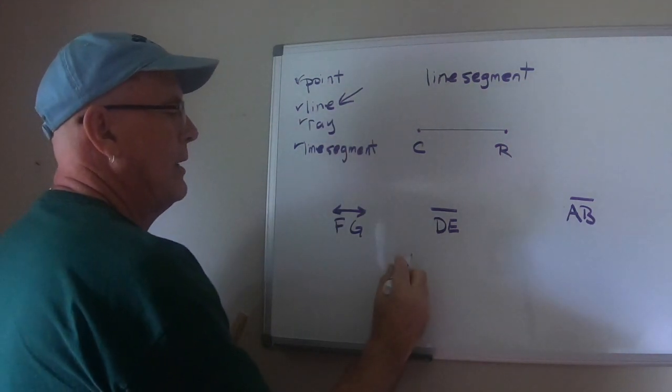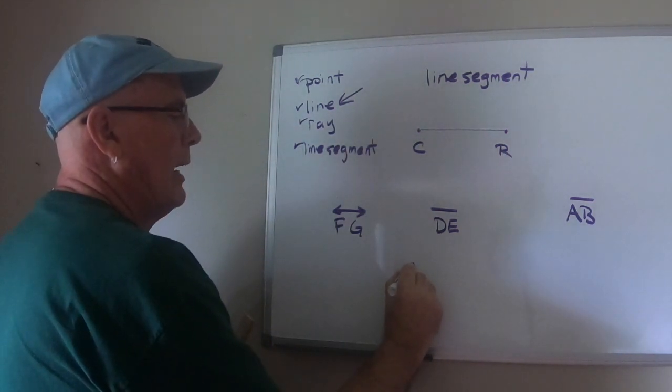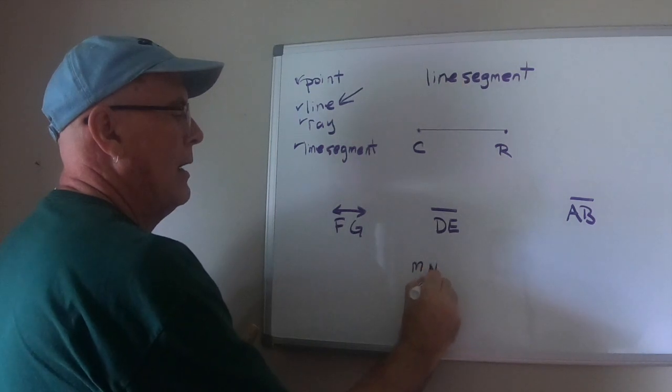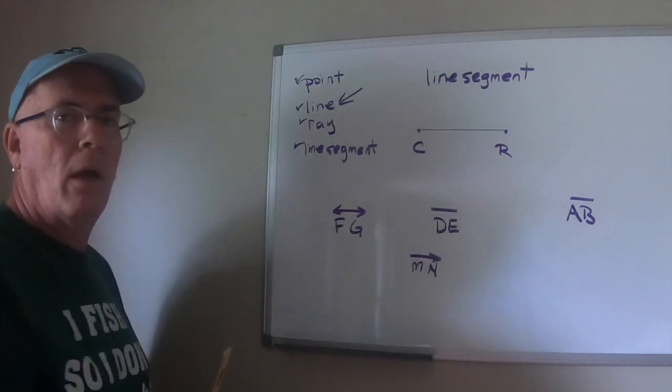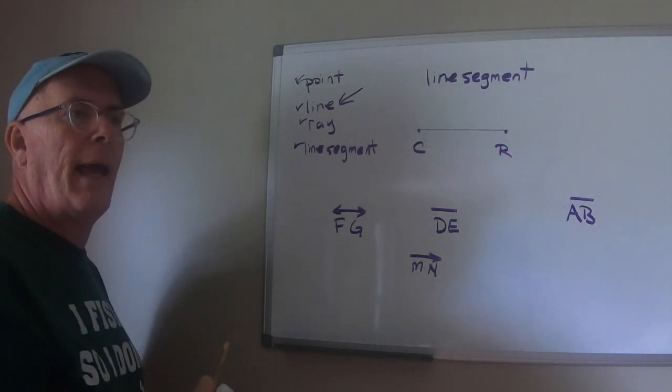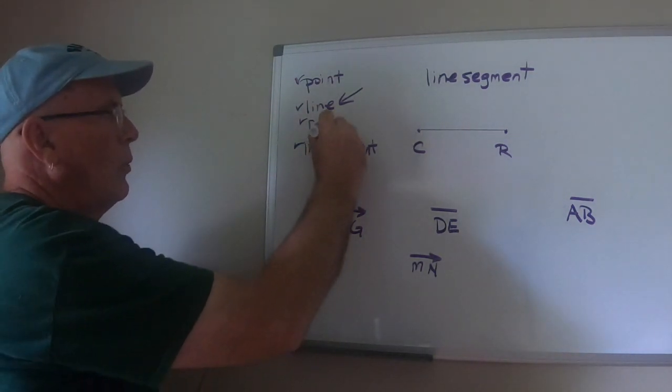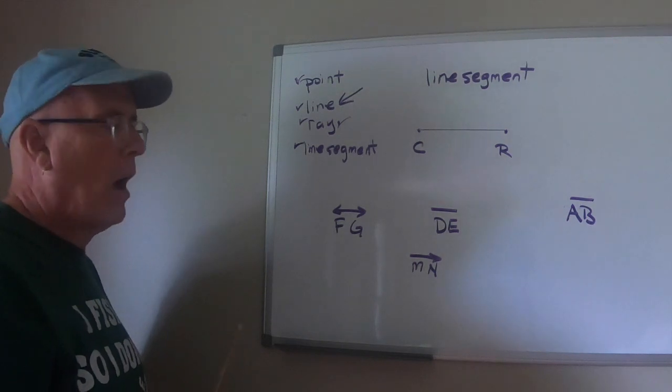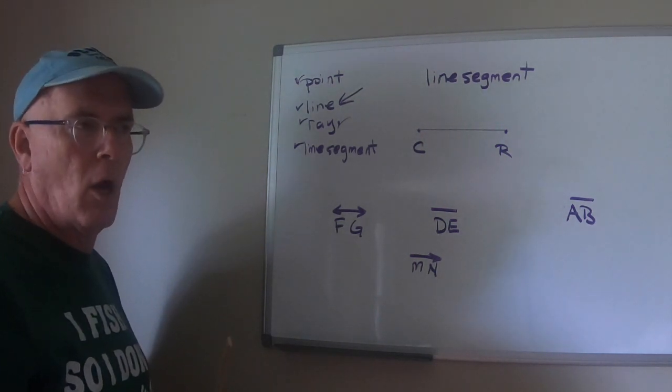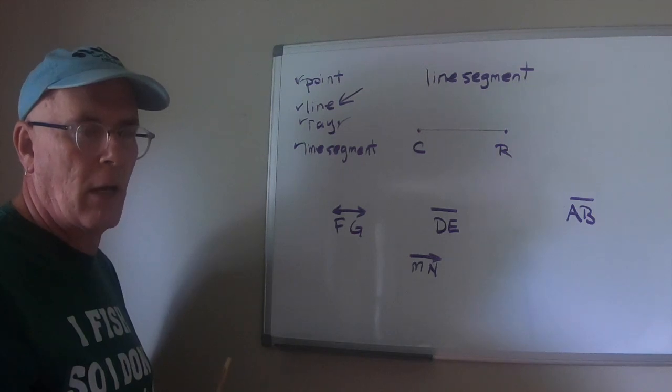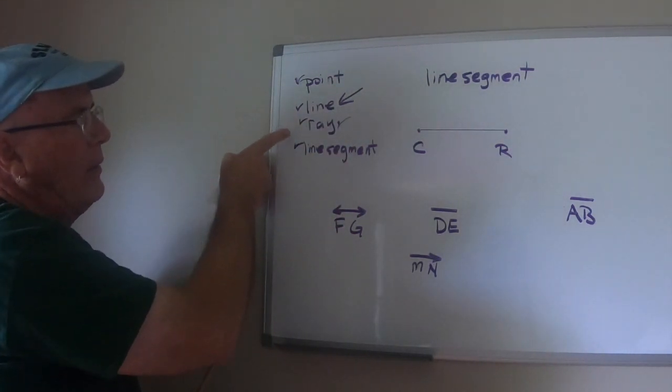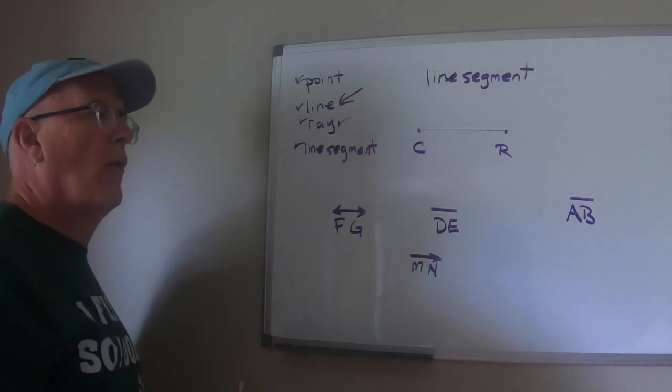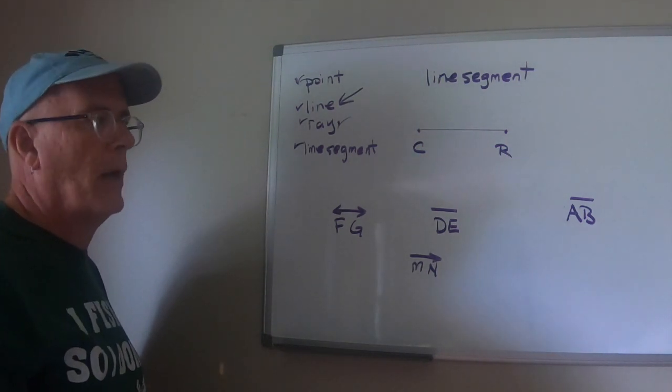If I had, let's say, M, N with that one arrow, that would be a ray. Okay? All right. So, those are the terms that we really need to know. We're going to obviously build on that quite a bit, but for now, point, line, ray and line segment are the ones we really have to have a handle on.